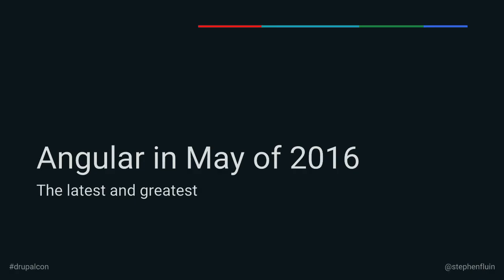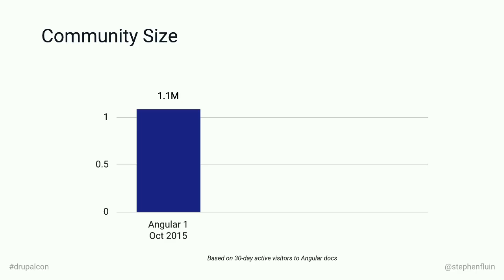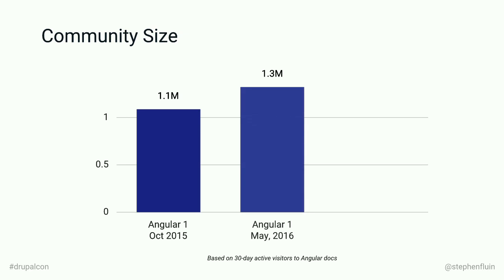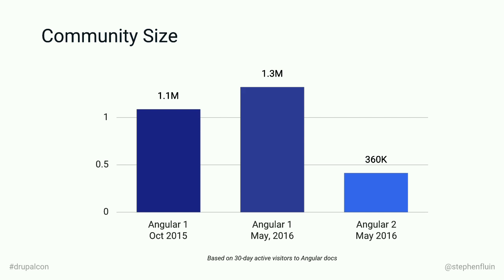A lot of people here had used Angular 1, but things are changing. As of May 2016: about a year ago we had 1.1 million Angular developers according to our doc site, and now we're at 1.3 million users of Angular 1. Angular 1 is still a fantastically growing platform. But even though Angular 2 was still in beta until last week, we already have more than 360,000 developers building with Angular 2, which echoes very well the growth of Drupal 7 to 8.